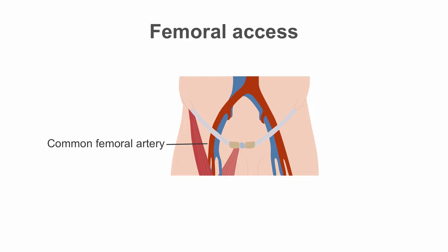In terms of the arteries in this region, the external iliac artery becomes the common femoral artery as it passes under the inguinal ligament, just distal to the inferior epigastric branch, and enters the femoral triangle. It bifurcates into the superficial and deep, or profunda, femoral arteries.